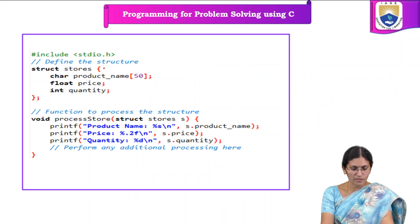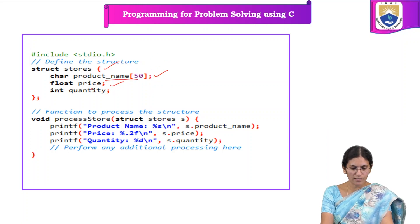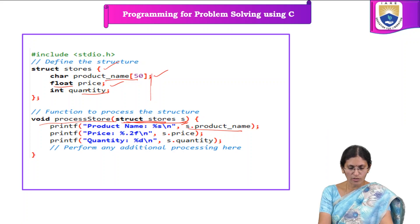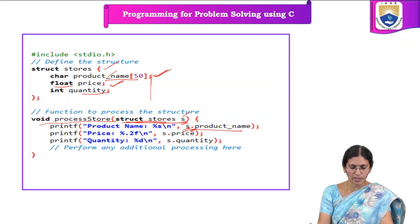Let us see the program here. This is the structure stores — it has three members. First one is a character array, next one is price which is a float type, and the last one is quantity which is of integer type. Here we have defined a user-defined function which receives a copy of the structure. The type of this variable is struct stores. In order to access each member of the structure, we use the dot operator: variable name dot member name. So, s dot product name, s dot price, and s dot quantity to access the respective members.